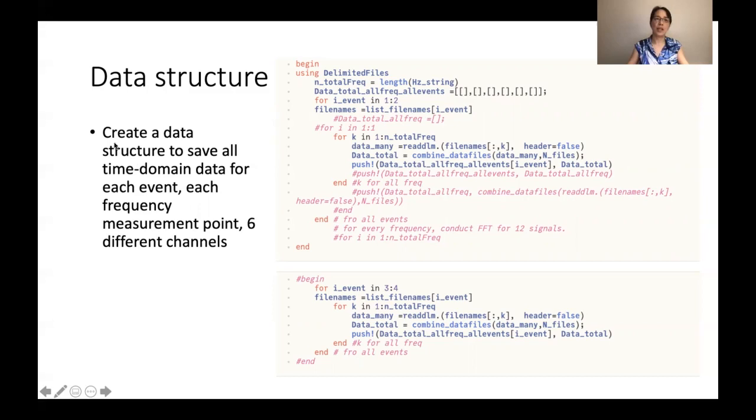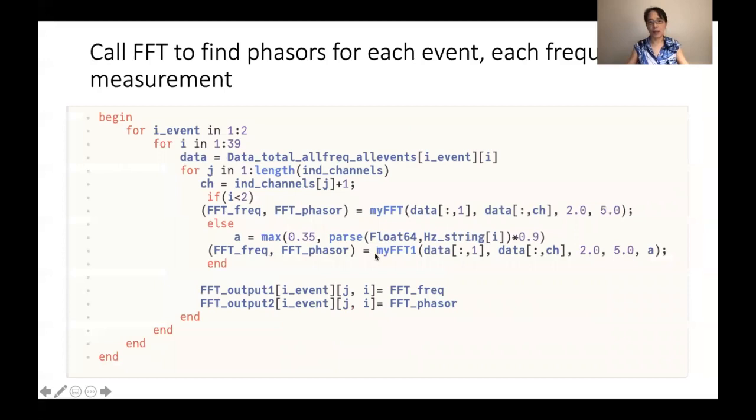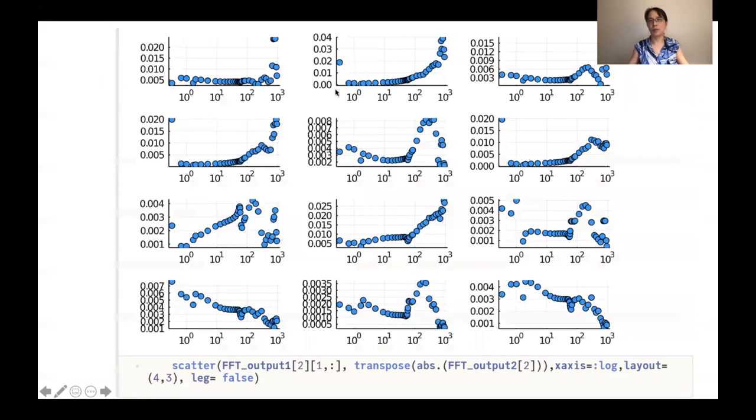So it's necessary to create a bigger data structure to save all time domain data for every frequency measurement, every channel, every event. So with that, then let's go to FFT. So here it's just FFT function that is pretty nice that you can find from a lot of demo of Julia. So with that, then we can just keep calling that for each event, each channel, each signal. So then we got these phases at every measurement that we want. So that's the very interesting one that we can finally grab the Bode plot here. We finished this step that is called grab fast phases.